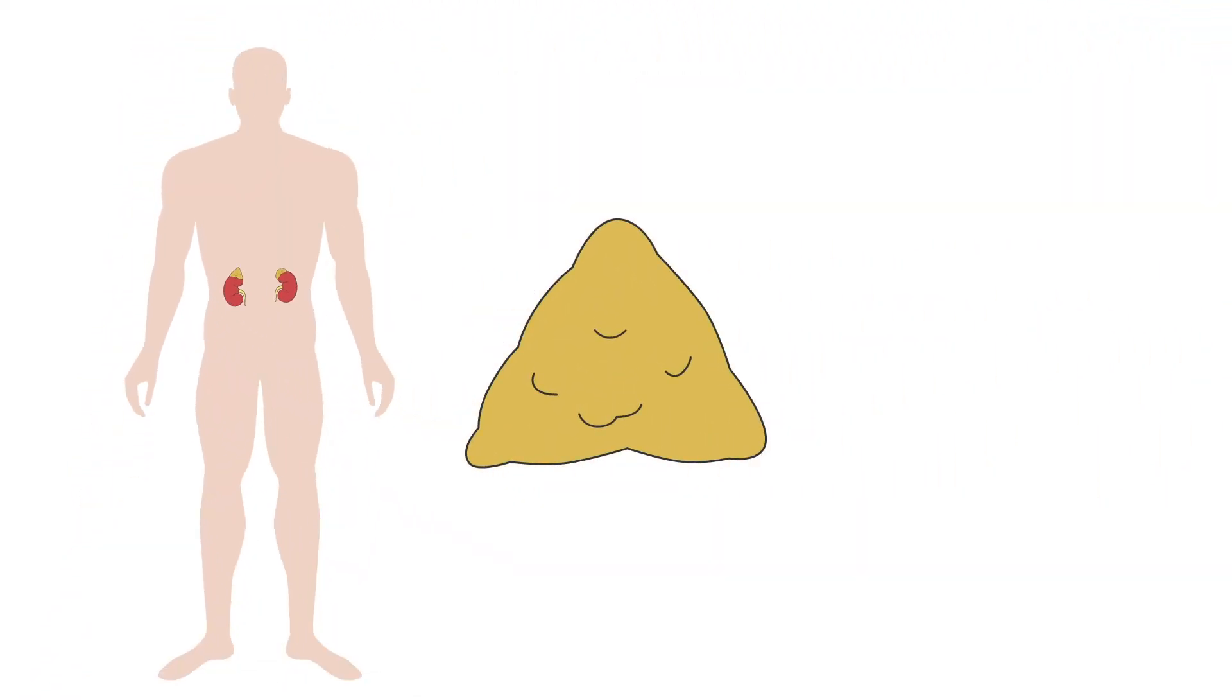Like the pituitary gland, the adrenal gland consists of two parts with different developmental origins. But rather than being separated into anterior and posterior, the adrenal gland is separated into the adrenal medulla on the inside and the adrenal cortex on the outside.